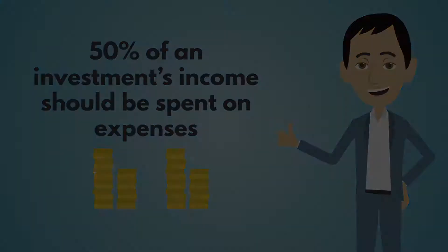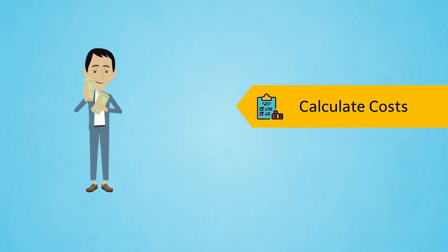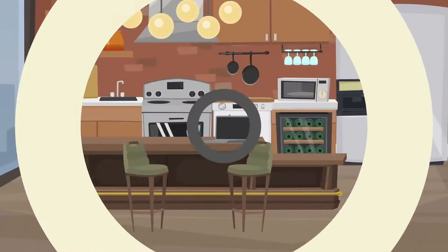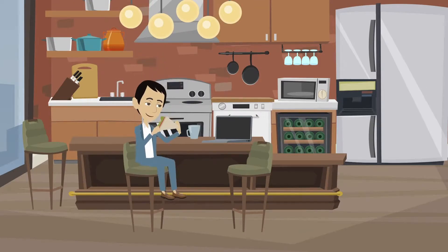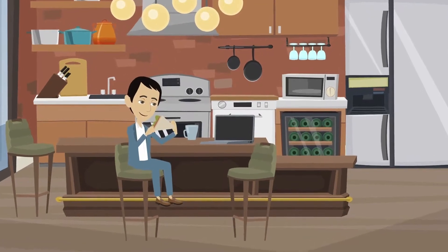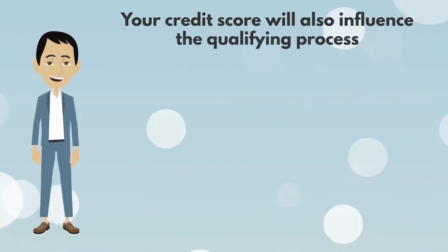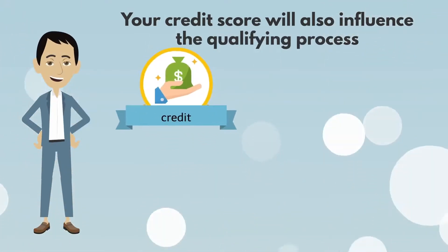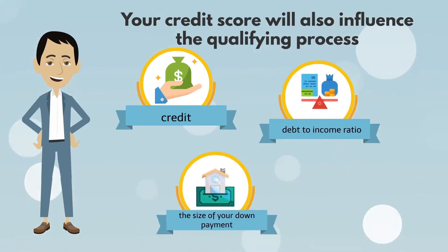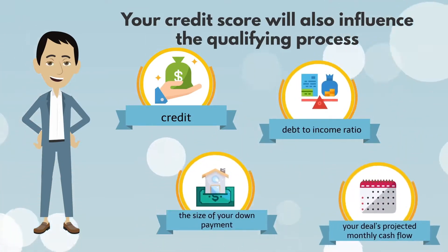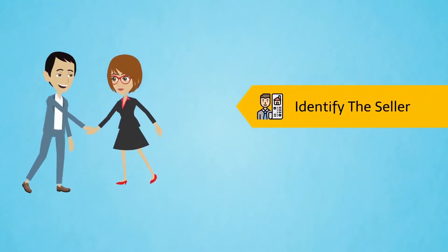As an investor, it's always important to calculate all costs associated with financing your investment, and this will vary from deal to deal. For example, if you decide to live in one of the units in your property and rent out the others, a lender will factor that into their qualifying ratio. Your credit score will also influence the qualifying process. A lender will look at four things: credit, debt-to-income ratio, the size of your down payment, and your deal's projected monthly cash flow.